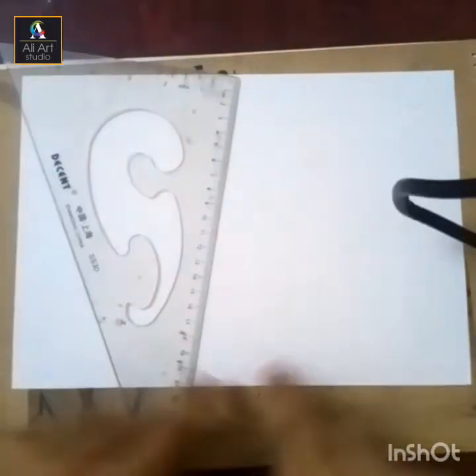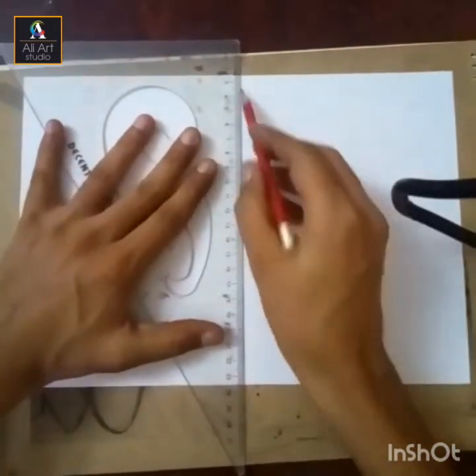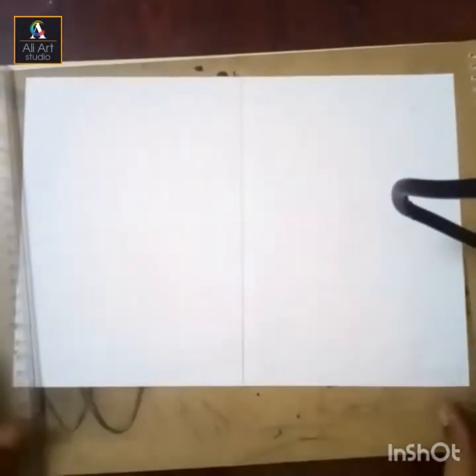Okay, I measured from the top and I measured from the bottom. I marked the dots and now I have drawn a line. Step number one for the landscape.